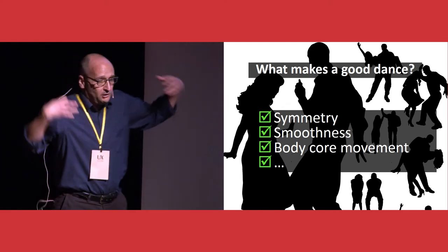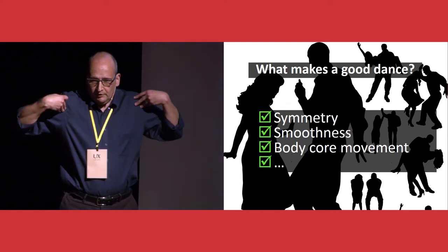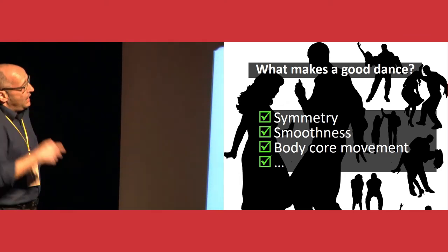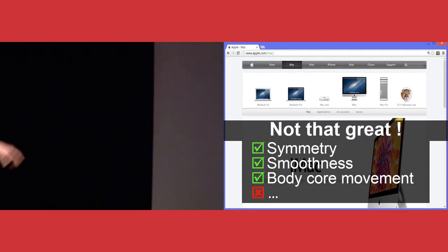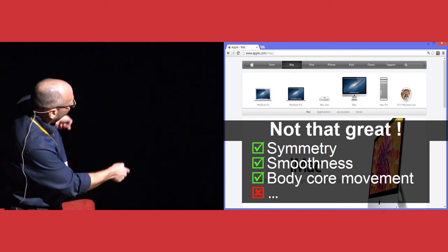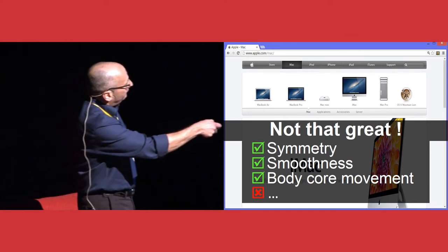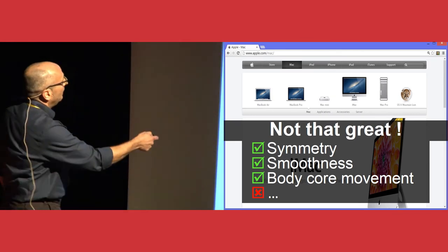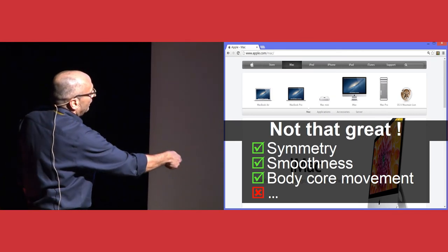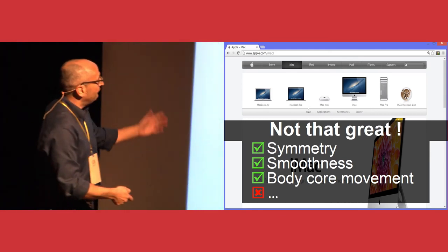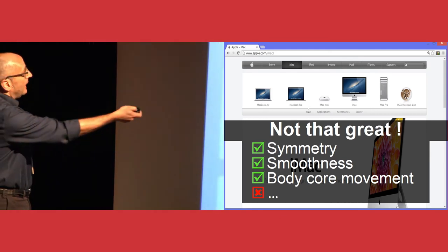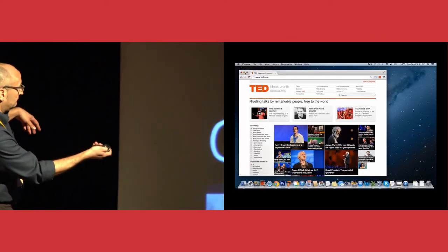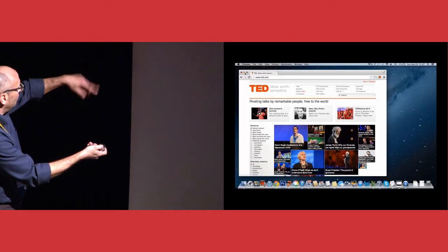He found out what makes a good dance. It should be symmetry, it should be smoothness, and body core movement. Body core movement, I mean the torso, this area of the body. So this is the Apple side. When you press here, it moves from the right to the left. It's not symmetrical. It's not smooth, and it does not involve body core movement.